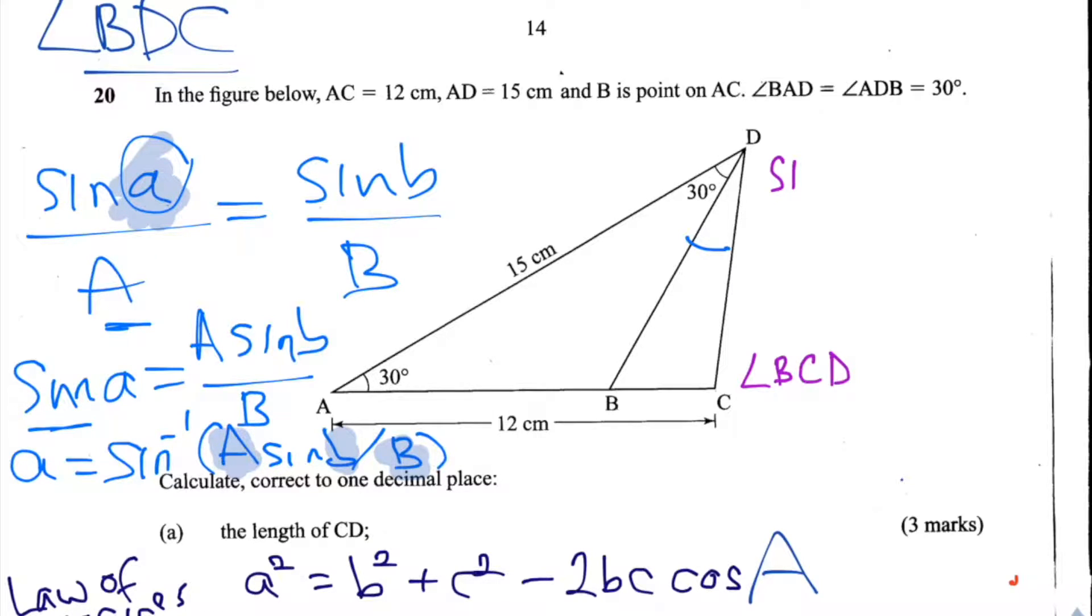So we're looking to find this angle here, BDC. And we want to see which side of the triangle is directly opposite it. So we have this one BC, but since BC is unknown, we could use 12 instead.